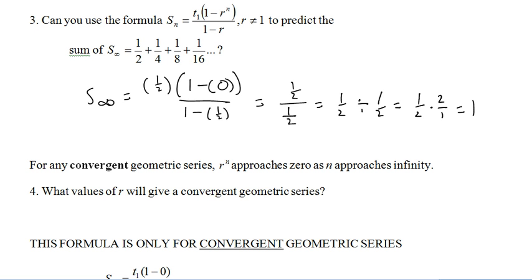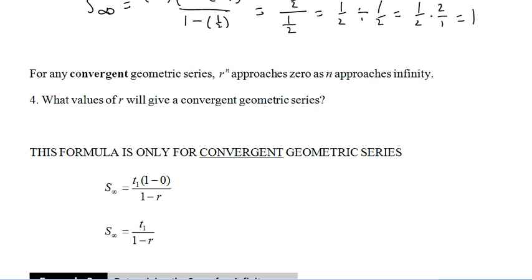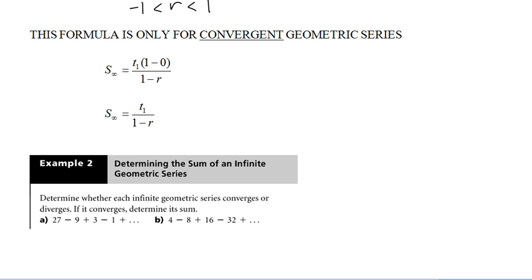So it works. So basically, if we just replace this, r to the power of n, with zero, because if it's convergent, it's going to approach zero, that gives us our formula for a convergent series. And I think you guys remember that values of r between one and negative one will give us a convergent series. And this down here is just showing that if we put in zero for r to the n, then we end up with this new formula here. And you'll be given that formula. Notice that this only works for convergent series.